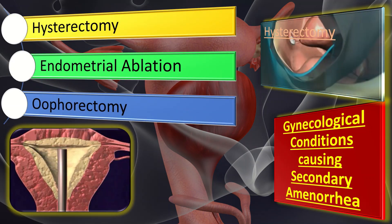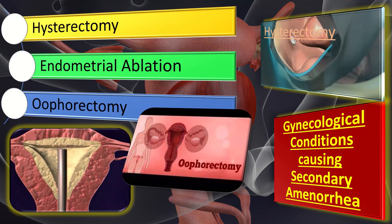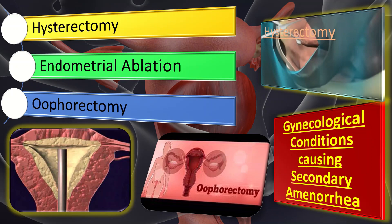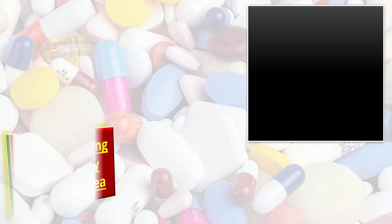What are the gynecological conditions causing secondary amenorrhea? Those include hysterectomy, endometrial ablations, and oophorectomy.